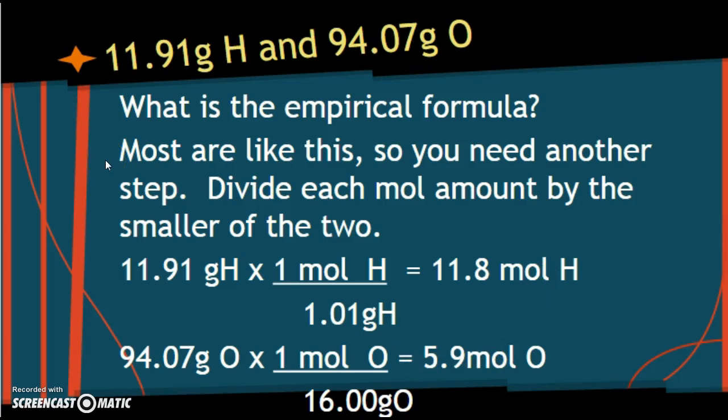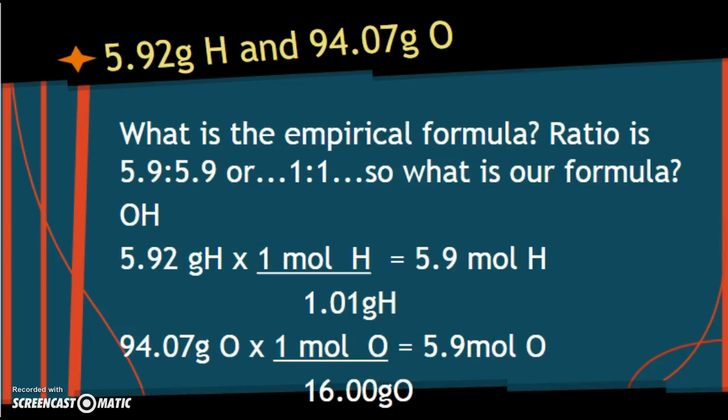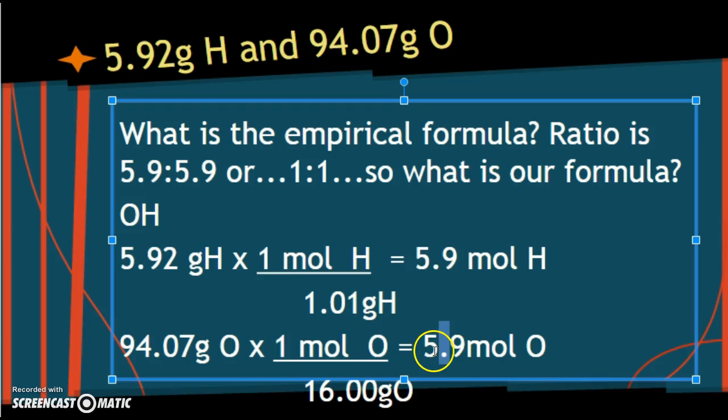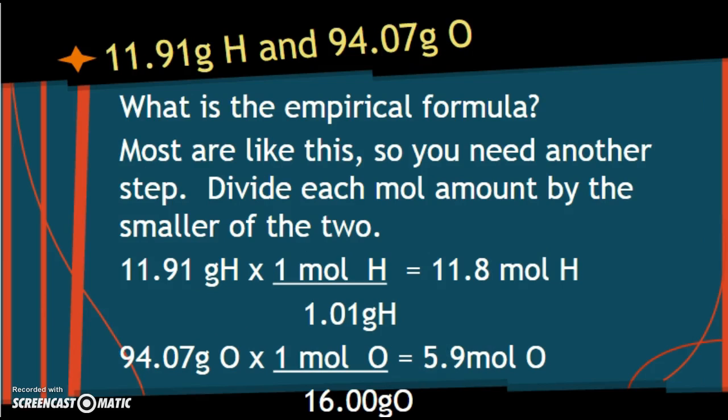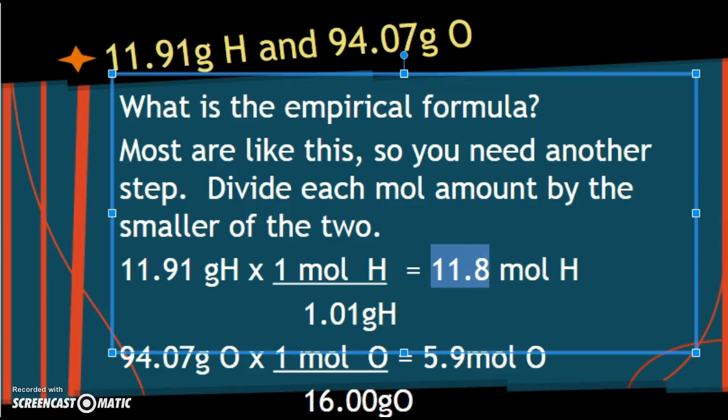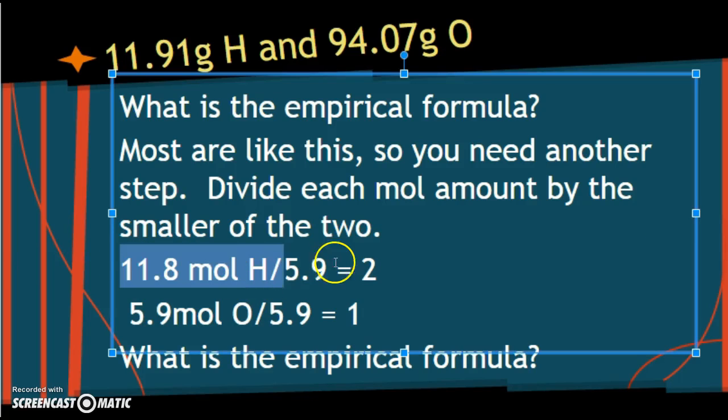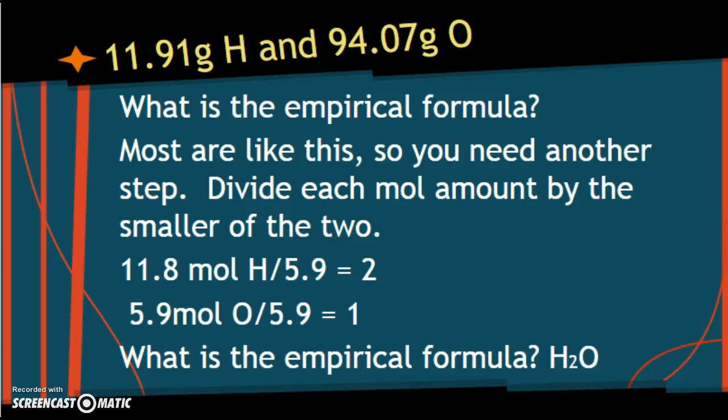So we have 11.8 moles and 5.9 moles. Now, most are like this, so you need to do another step. Not very many of them are easy like this where they give you the same answer and you're like, oh, woohoo, one-to-one. No, they're not all that easy. So what we have to do is divide each mole by the smaller of the two. So these are our two answers. Our two answers are 11.8 moles and 5.9 moles. Which one's smaller? 5.9. So I'm going to take that 11.8 divided by 5.9, I get 2. I take the 5.9 divided by 5.9 and I get 1. So here's my hydrogen, I get an answer of 2. Here's my oxygen, I get an answer of 1. What's my empirical formula? H2O.